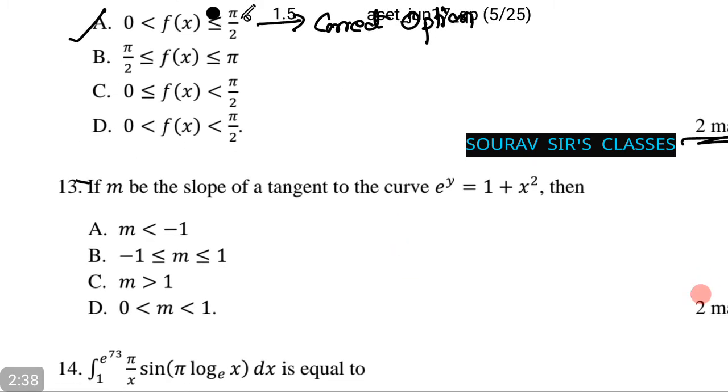In the next question, if m be the slope of a tangent to the curve e to the power y equals 1 plus x squared, then which of the following is correct? We need to solve this by differentiating m.